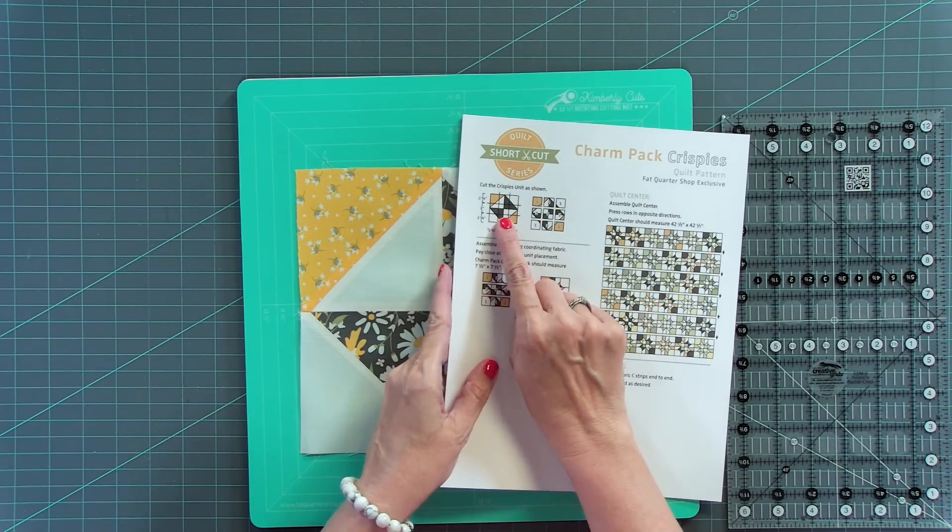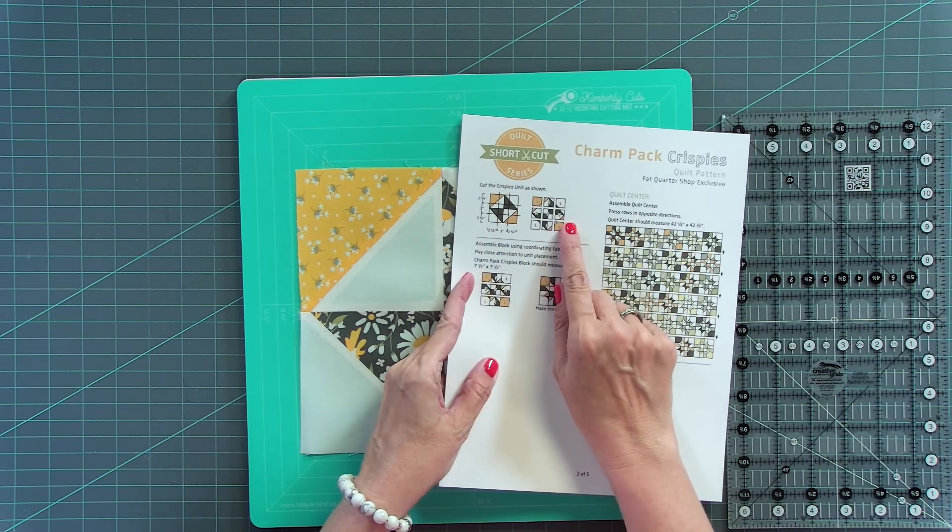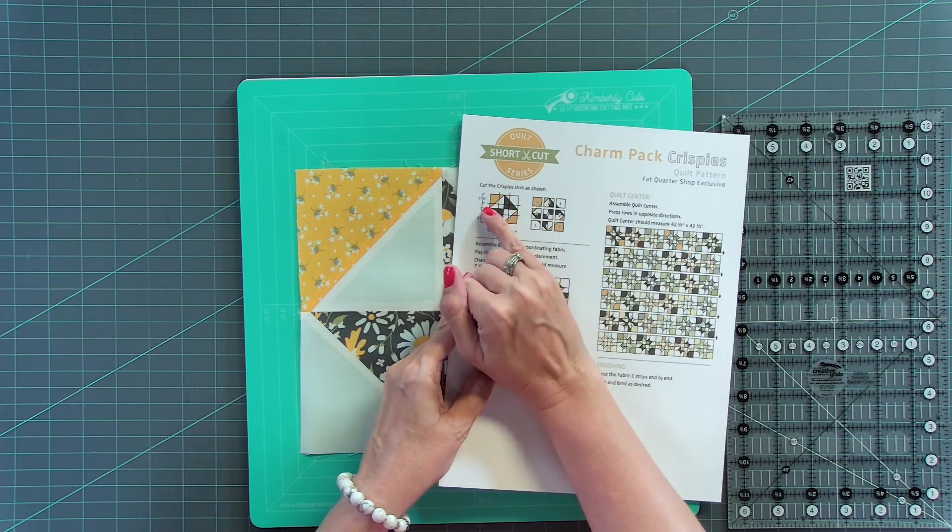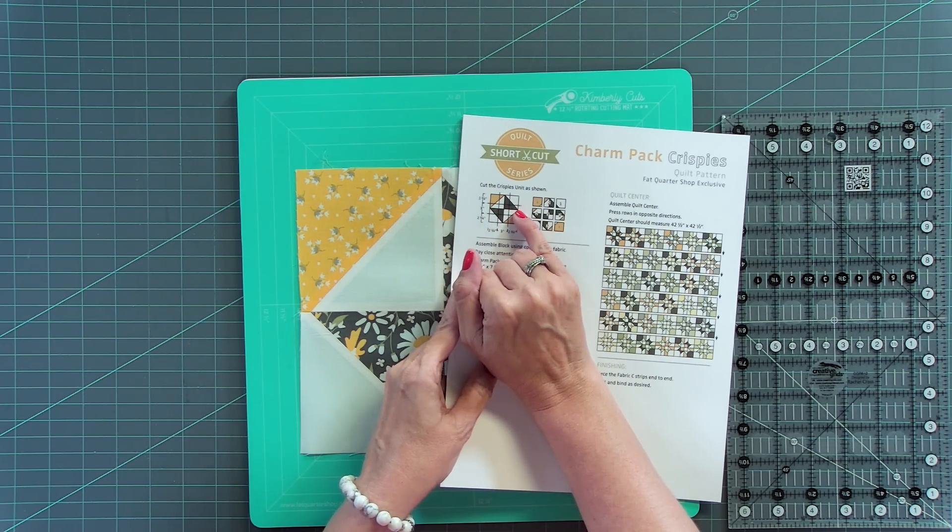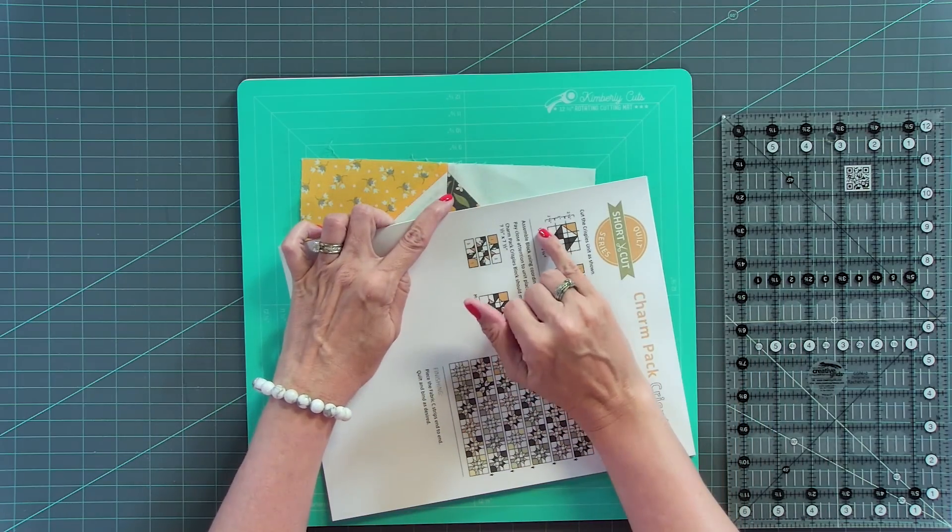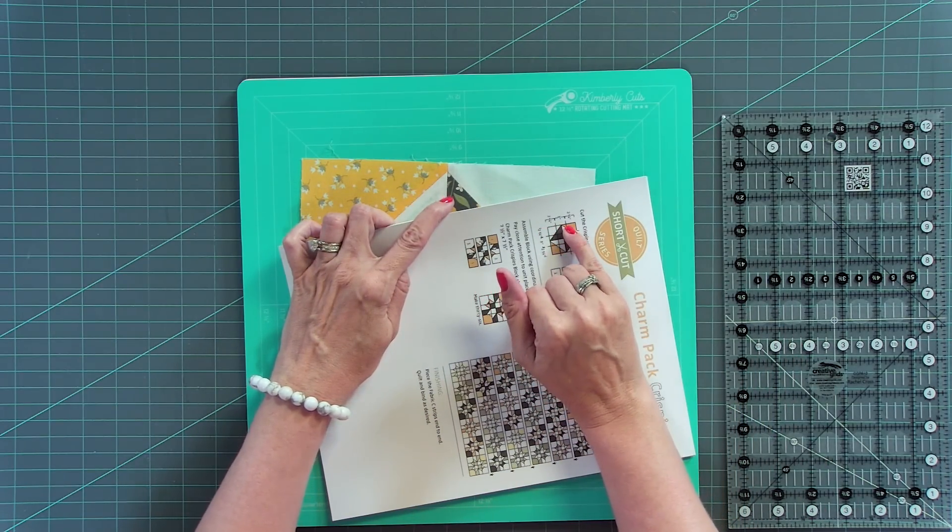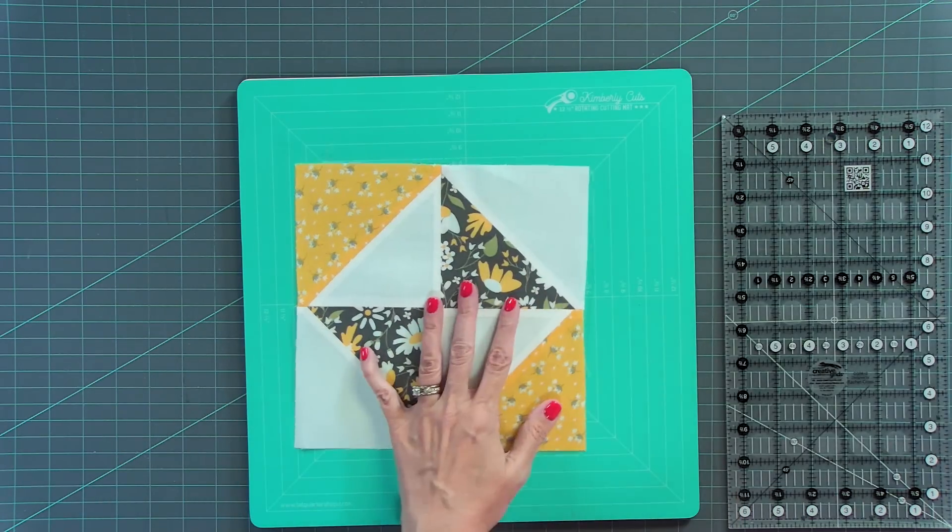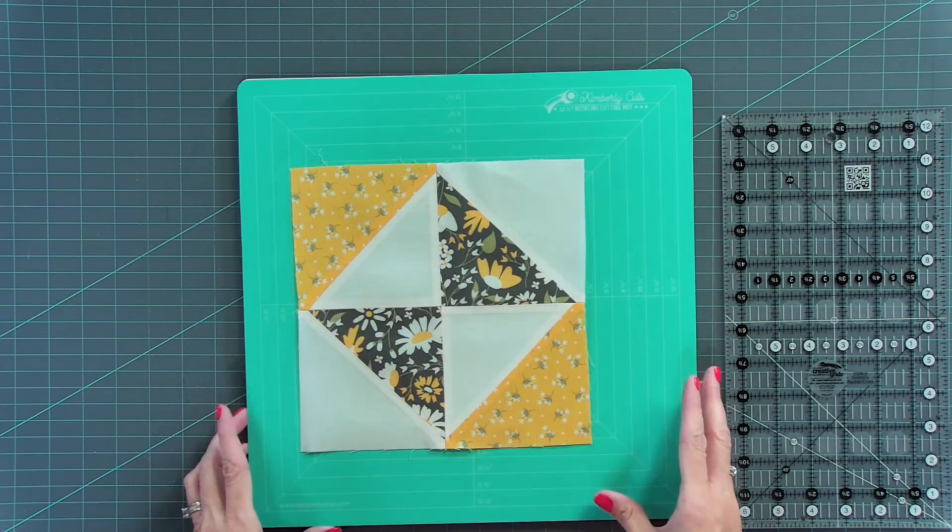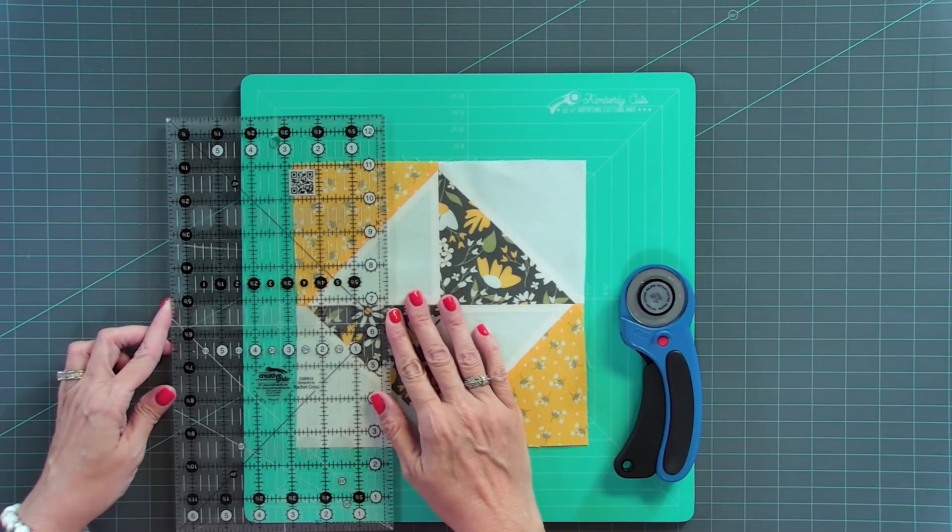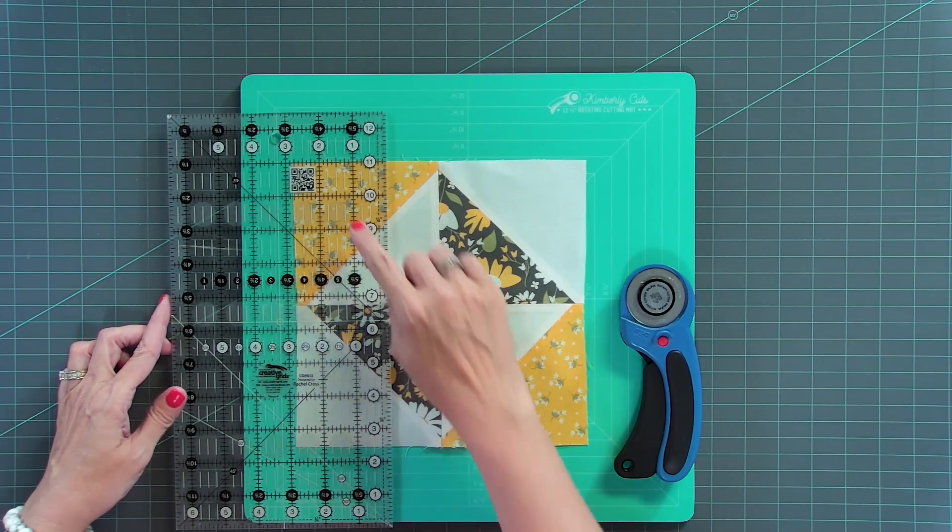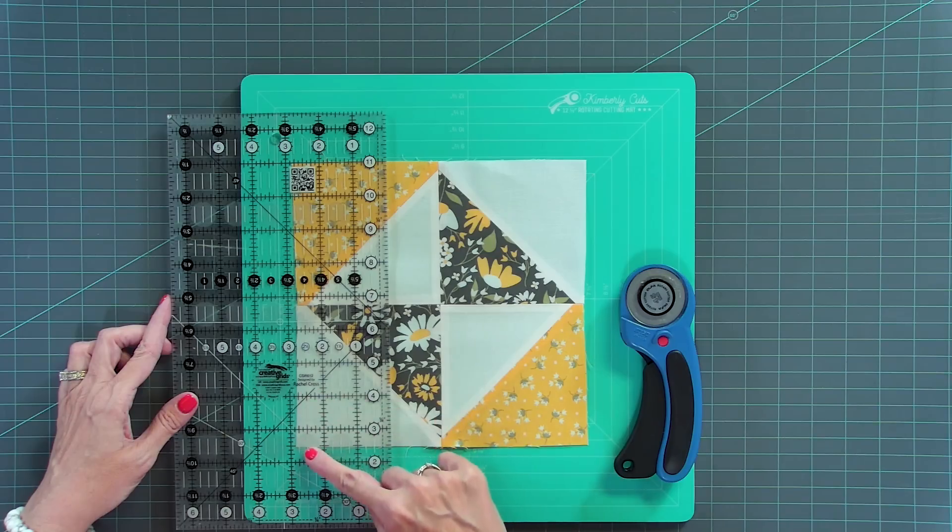So from here, you're gonna pay attention to this diagram really closely. We're gonna be cutting two and three quarters this way, then three inches. And that's gonna leave you with two and three quarters. We're gonna do the other side, two and three quarters, three and two and three quarters. And you will see that using a rotating mat is gonna be really helpful. So I'm going to use a Creative Grids ruler, and just mark two and three quarters away, trim.